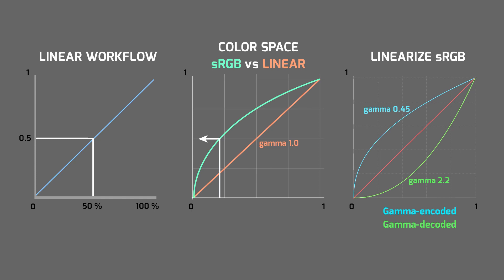Now I will show you why we need to linearize normal maps and grayscale textures. On the first graph you can see how a linear workflow works. As an example, if I have input which contains a grayscale texture with 50% gray, the correct numerical output value is supposed to be 0.5. But as you can see on the second graph, if I am using an sRGB texture or gamma-encoded texture, I am not able to have an equivalent numerical output anymore.